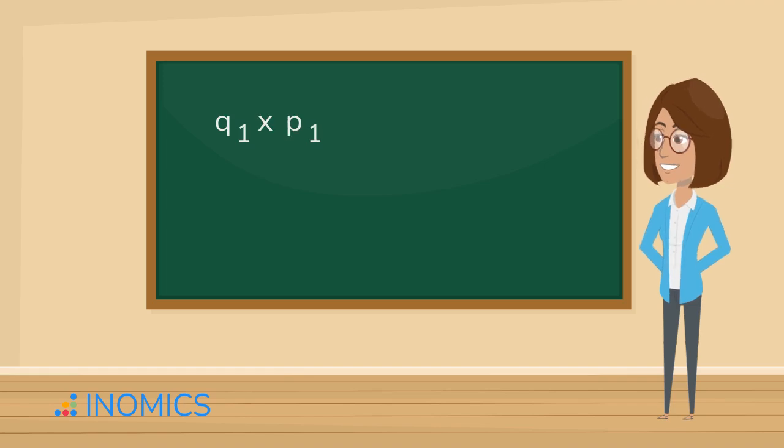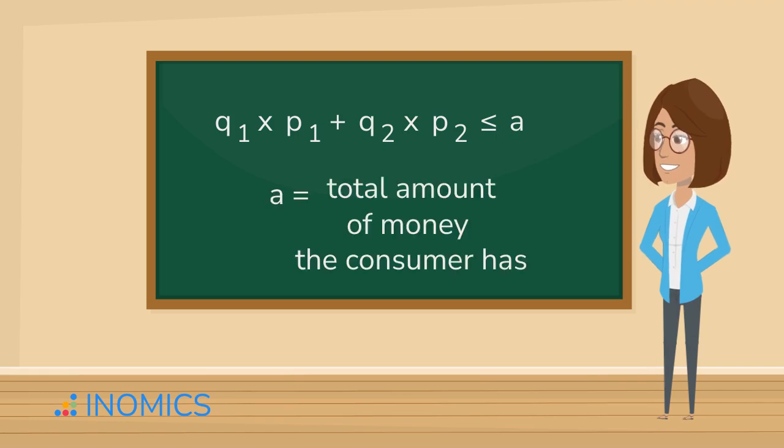Q1 multiplied by P1 plus Q2 multiplied by P2 less than or equal to A, where A is the total amount of money the consumer has. Feel free to pause the video and double-check the equation.